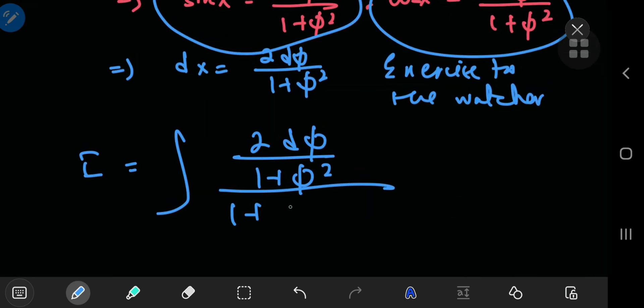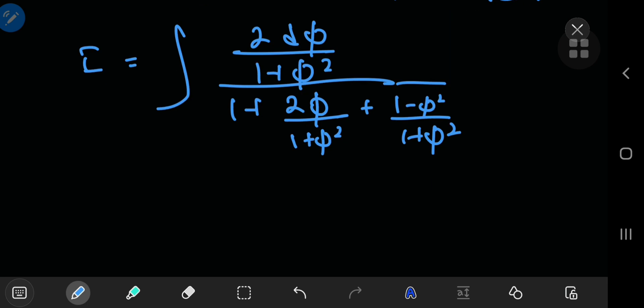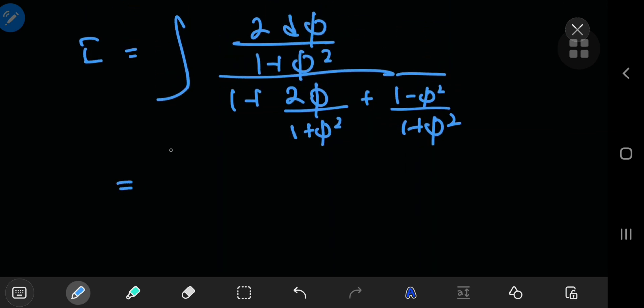Sine of x was 2 times phi divided by 1 plus phi squared, and the cosine of x was 1 minus phi squared divided by 1 plus phi squared. So this actually makes our work a lot more simple in the phi world thanks to the Weierstrass substitution.